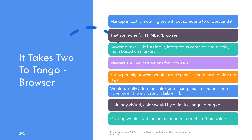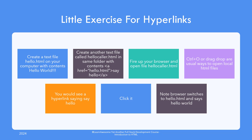As we saw, the markup is meaningless without someone who can understand it, and that someone for HTML is the browser. The browser is an application that reads an HTML file, interprets its contents, and displays them based on markers. Markers are like instructions for the browser, and it knows how to act accordingly. When it reaches the part of the text that says <a>, it interprets the hyperlink element and displays 'My Research' on the screen in blue — fit for a link. When you hover your mouse over it, it changes the cursor to a hand shape indicating a clickable link. If you click the link, the browser loads the page whose URL was present in the href.